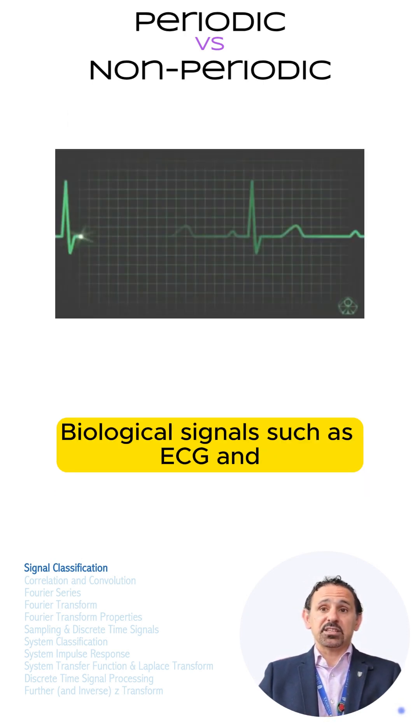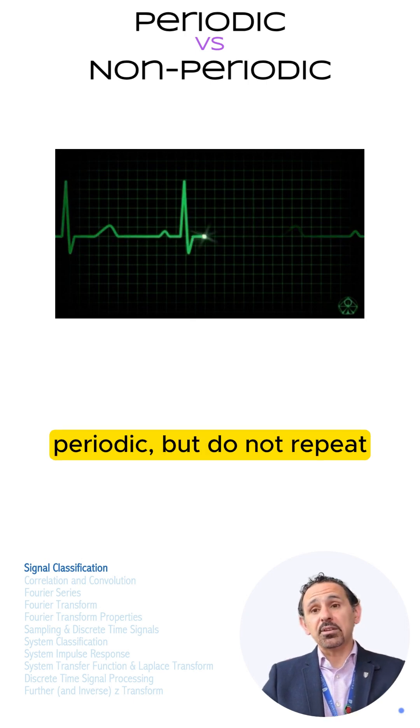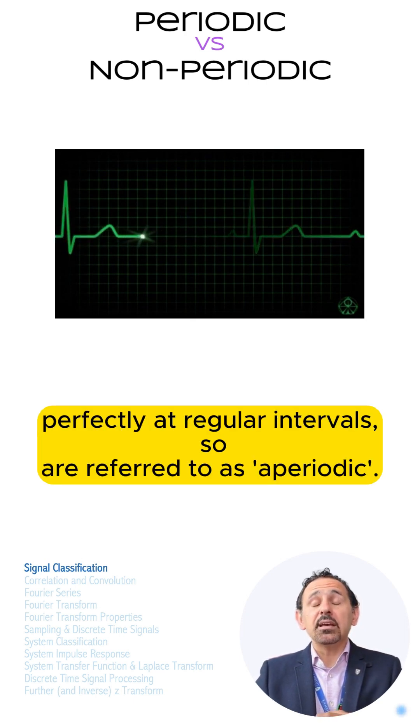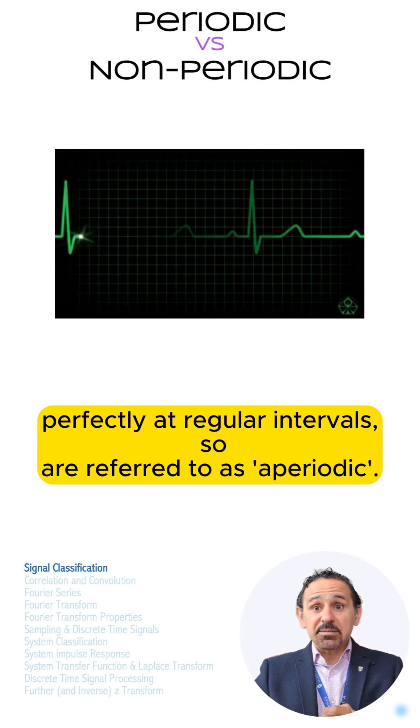Biological signals such as ECG and brain waves may appear to be periodic, but do not repeat perfectly at regular intervals, so are referred to as aperiodic.